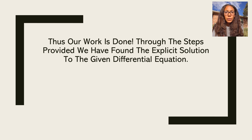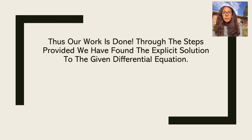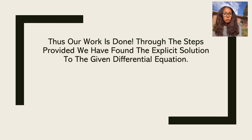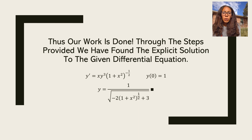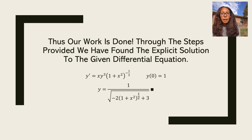Now that we've found the correct particular solution, our work is done. We separated and integrated both sides, solved for c, put it into explicit form, and tested our initial conditions. The explicit solution for the given differential equation with initial value conditions is y equals 1 over the square root of negative 2 times the quantity 1 plus x squared to the one-half plus 3. I hope this was helpful. If you have any questions, feel free to email me. Thank you so much for watching — have a nice day.